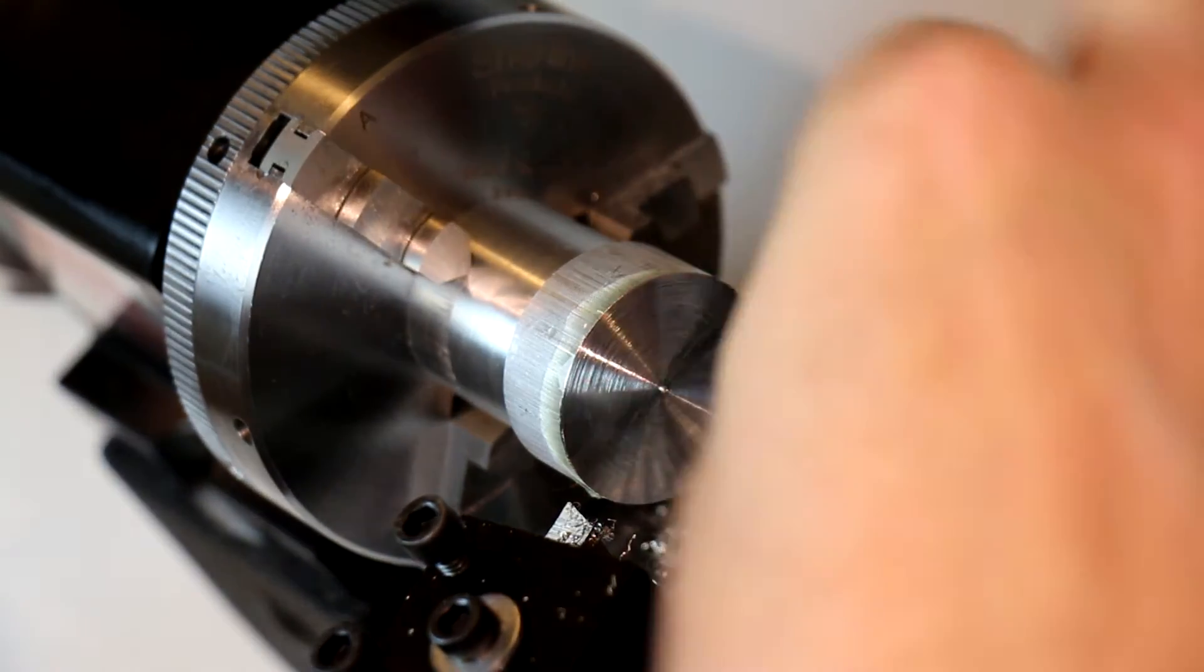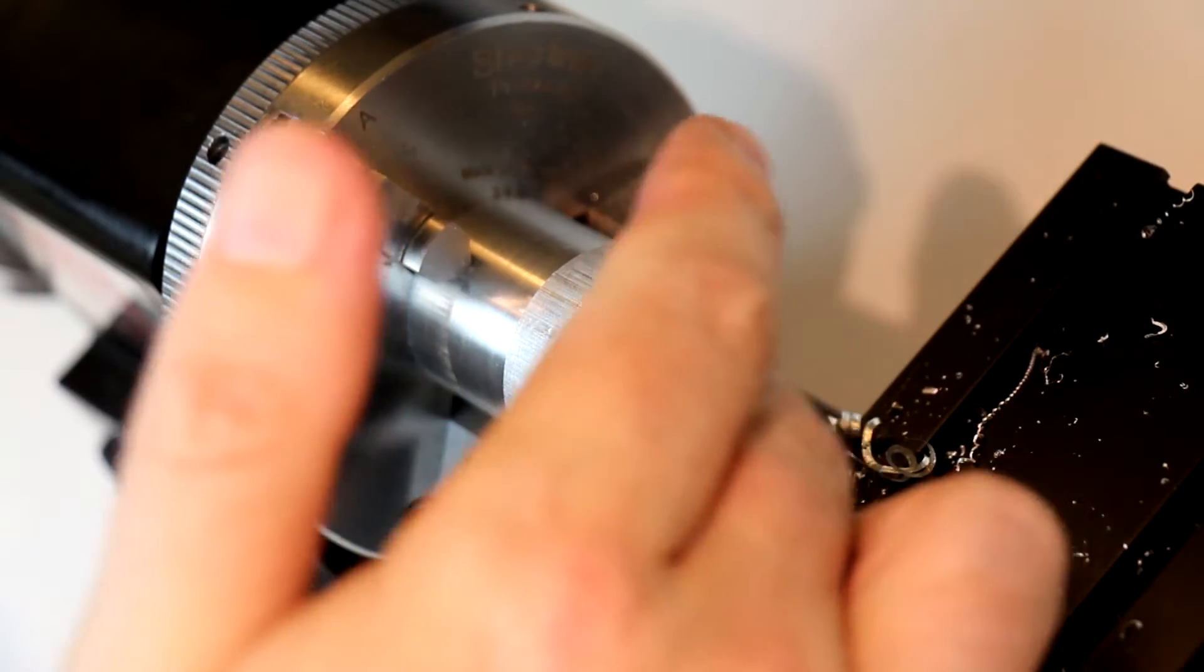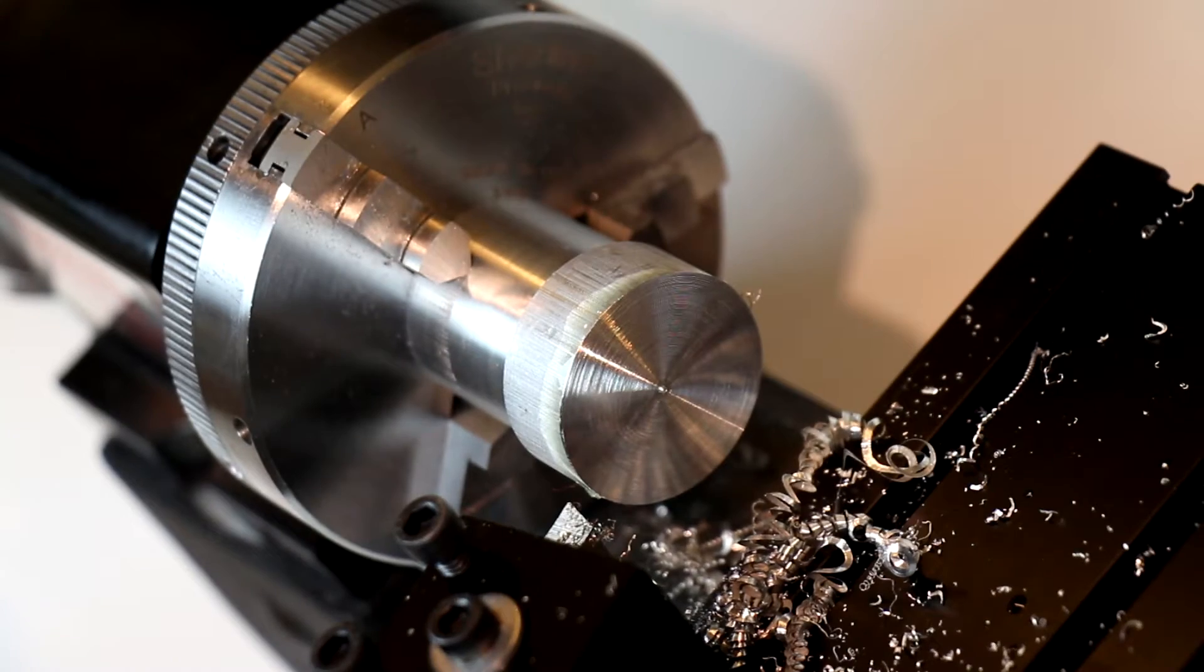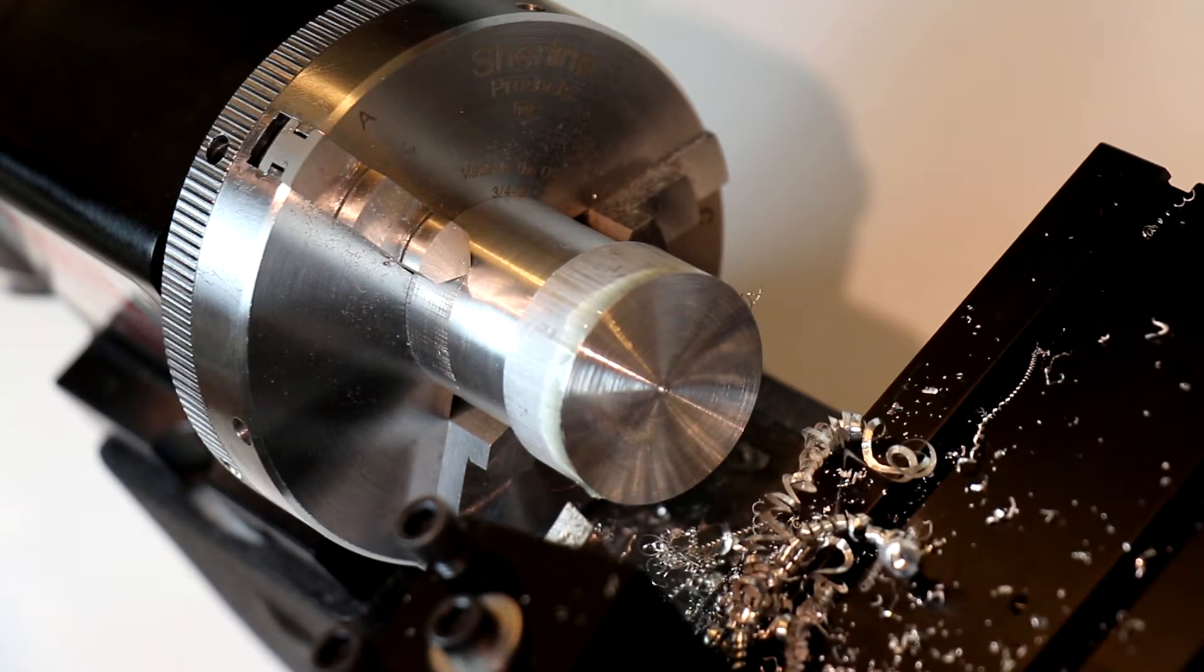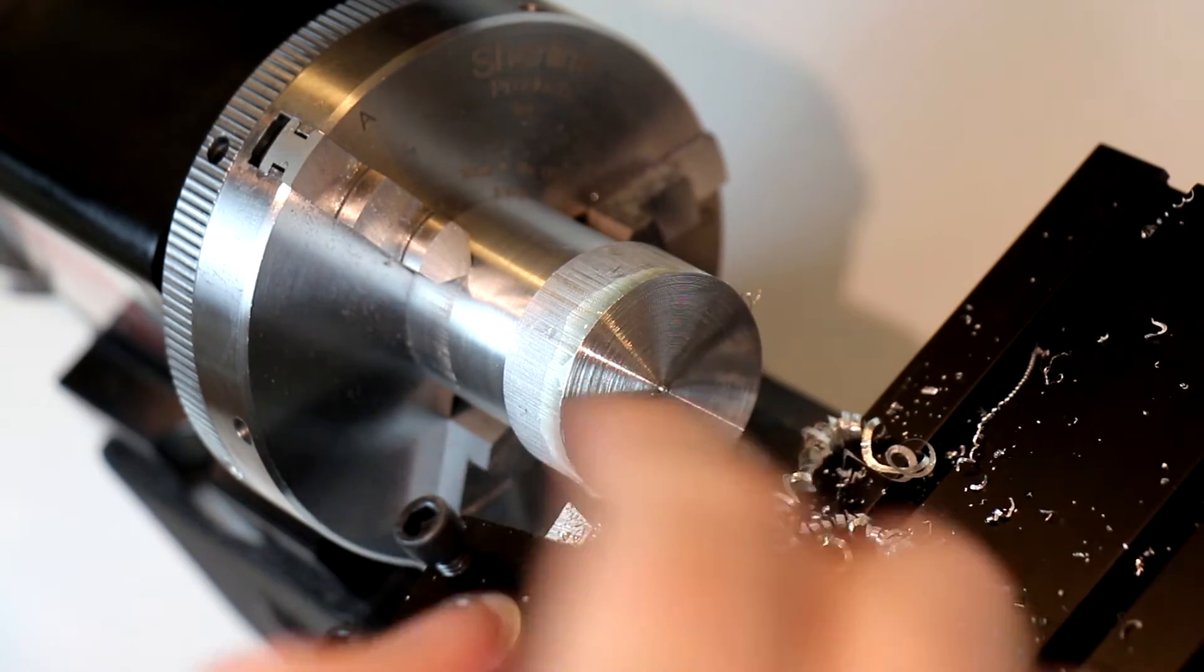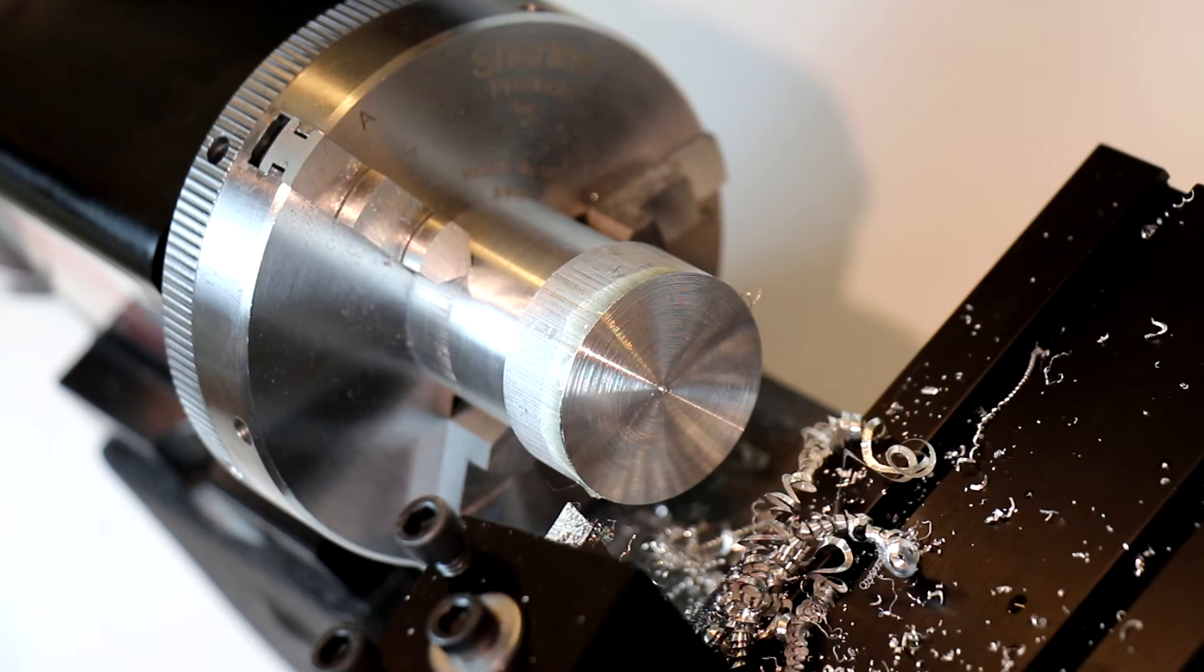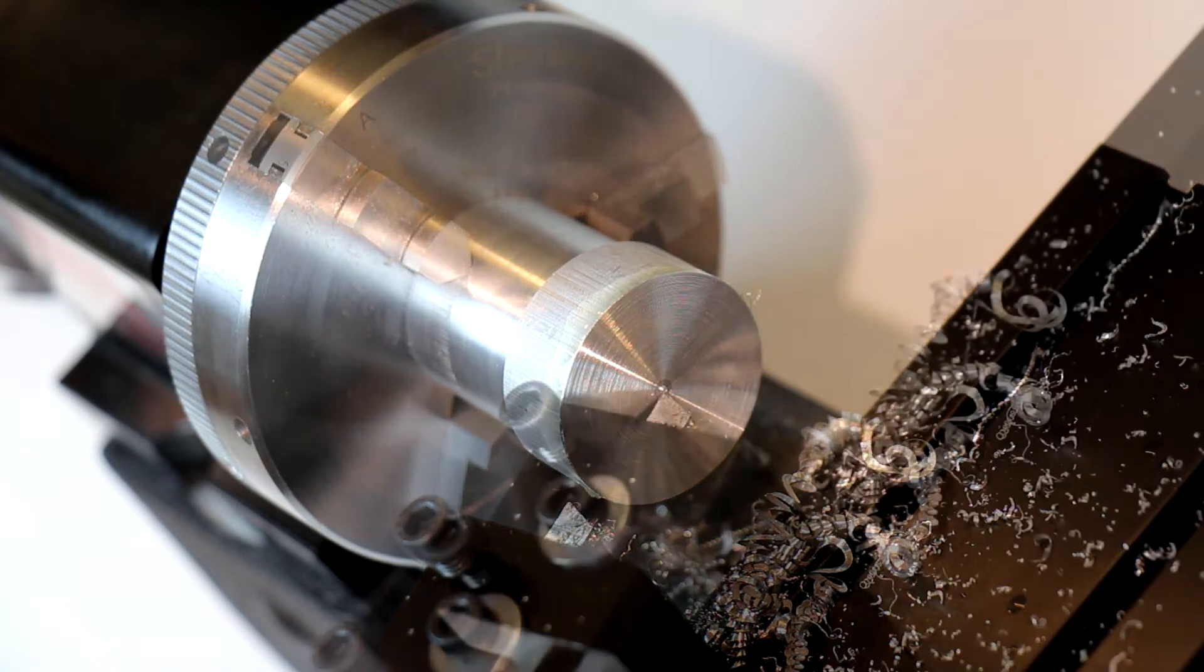So here we've got a pretty nice cut. Still could use some improvement on probably increasing the speed of the spindle to get that a little bit more polished. And then I'm also noticing that my tool height is set a little low because that little nub that we get left in the middle.